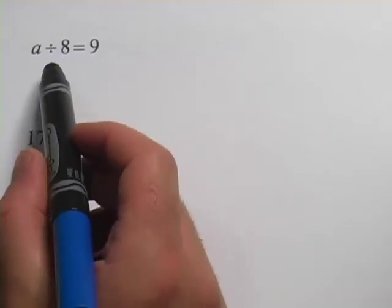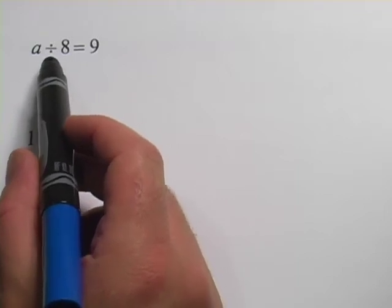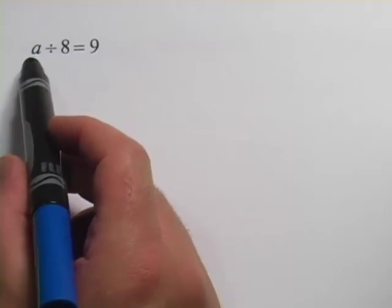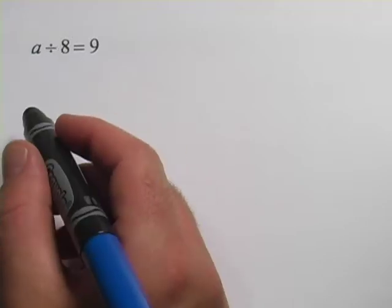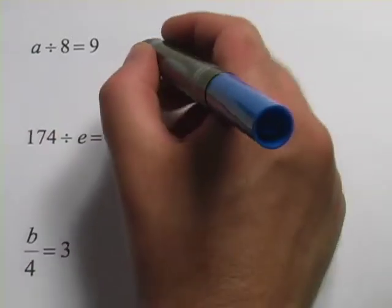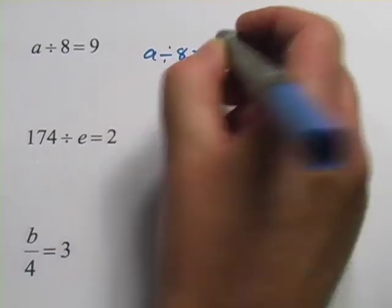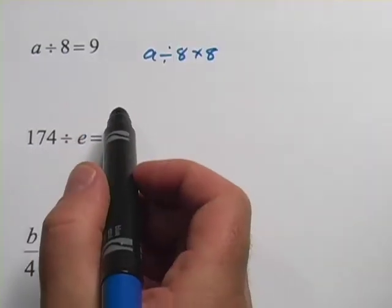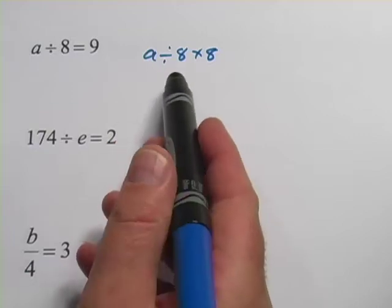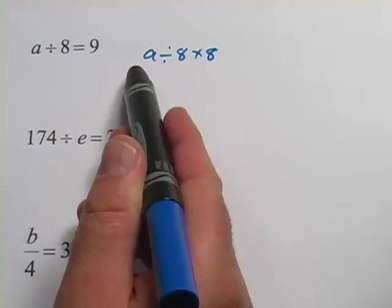If we want to undo this divided by 8 to get the a by itself, we would multiply by 8. Think about it this way: a divided by 8 times 8 just comes out to a. If you take anything and you divide it by 8 and then you multiply it by 8, it comes out to what you started with.